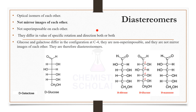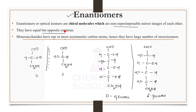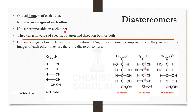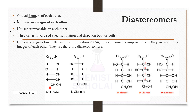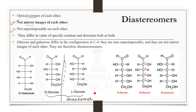Next are diastereomers. These are also stereoisomers but they are not mirror images of each other. In enantiomers, the rotations are equal and opposite, whereas in diastereomers the rotations are completely different — they have a specific value of rotation. Most importantly, diastereomers are not mirror images of each other and definitely not superimposable on each other. For example, D-glucose and L-glucose are enantiomers of each other, but if I draw D-galactose and compare it with D-glucose, the structures are different.